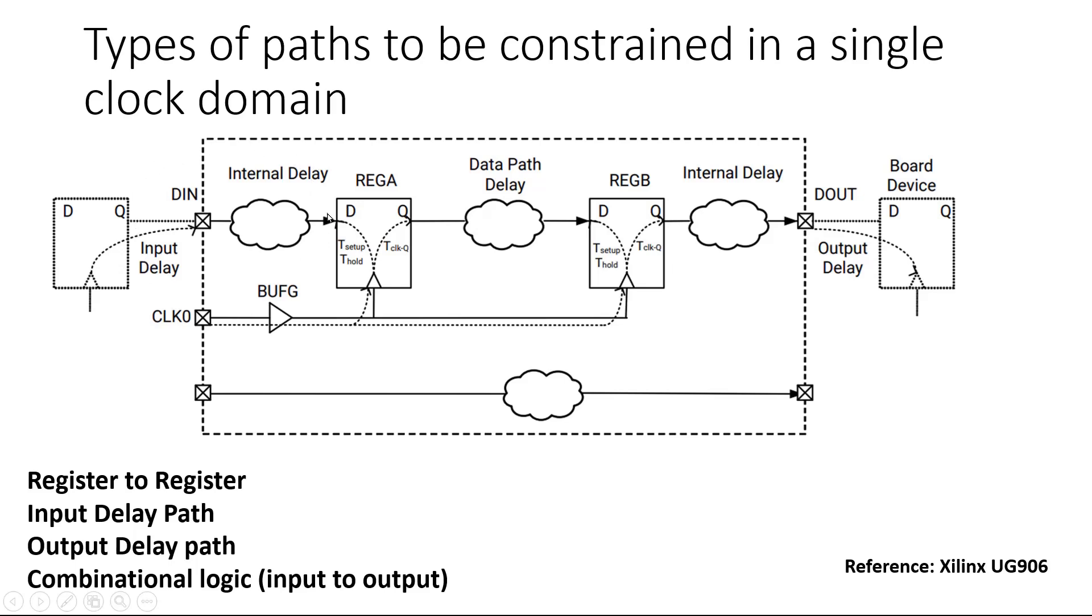But these input paths should be constrained using set input delay path. One more thing: these interfaces are of two types. One type of interface is called system synchronous interface and another type is called source synchronous interface, so our constraints will vary depending on the interface type.